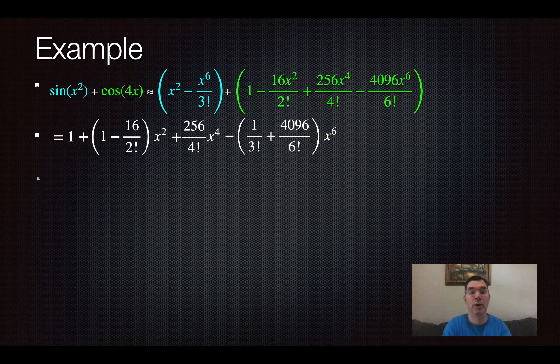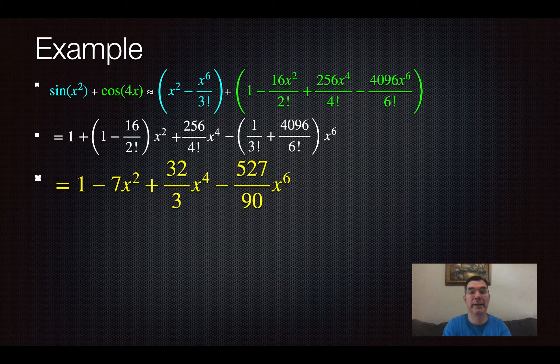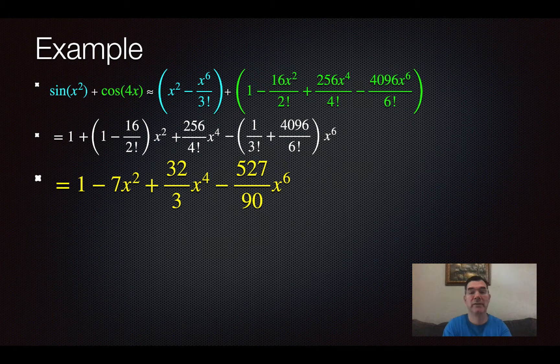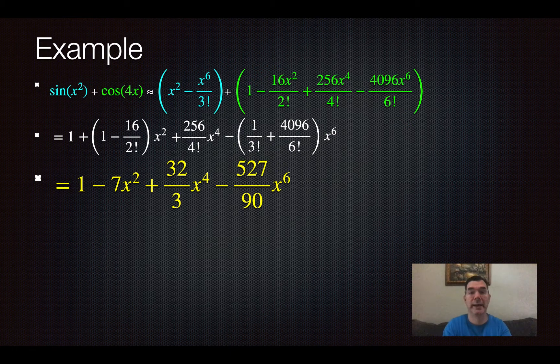So once I simplify, I would get that polynomial right there. 1 minus 7x squared plus 32 over 3x to the 4th minus 527 over 90x to the 6th. And that polynomial would approximate the values of sine of x squared plus cosine of 4x for x values that are near x equals 0.